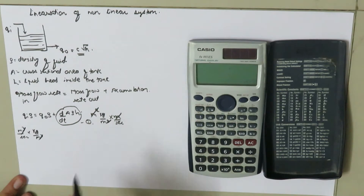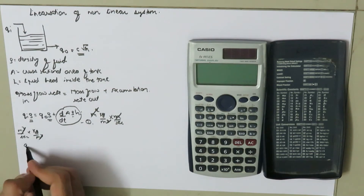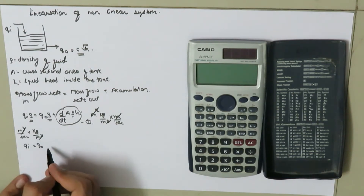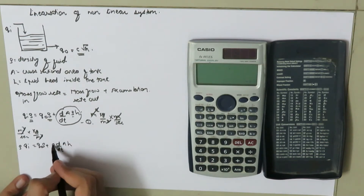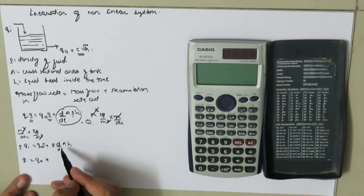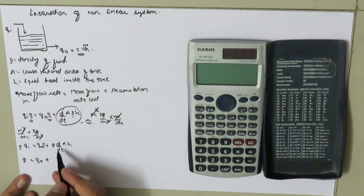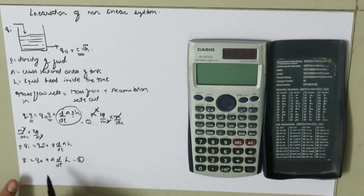Assuming the density of the fluid is constant, rho cancels out. Assuming the cross-sectional area A is also constant, it comes out of the derivative: Q_i equals Q_o plus A times dH/dt. This is equation number two.